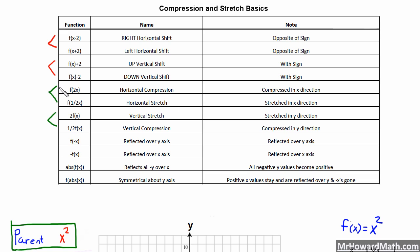When we are multiplying in parentheses with x, we have a compression or a stretch in the x direction — that is a horizontal compression or stretch. Horizontal compression occurs when our number with x is greater than 1, and horizontal stretch occurs when we're between 0 and 1, meaning our number is less than 1 but greater than 0.